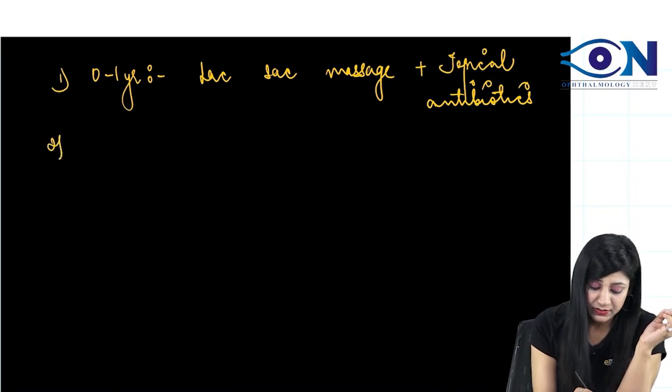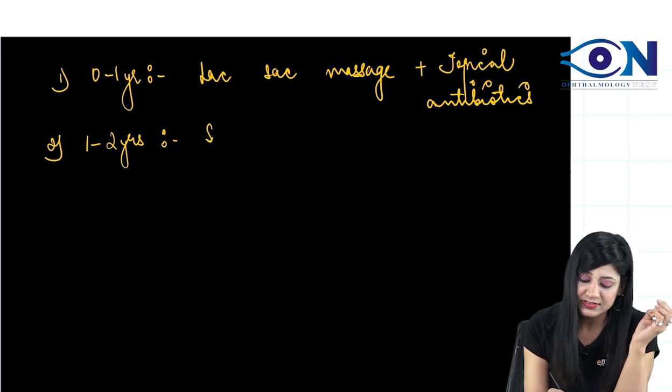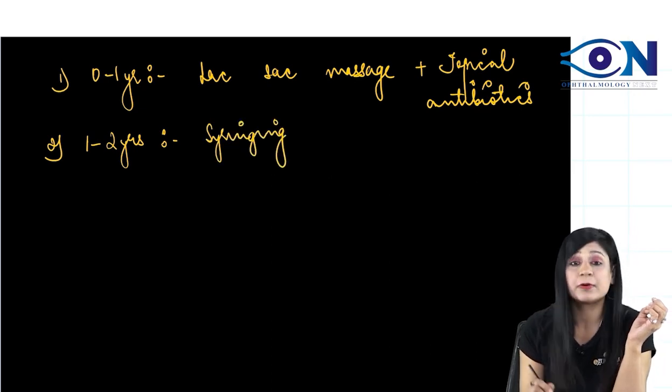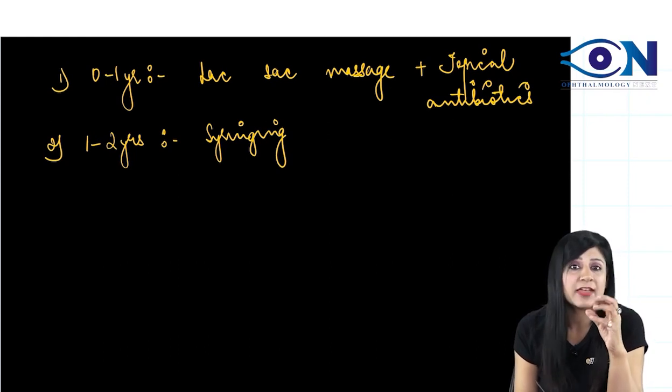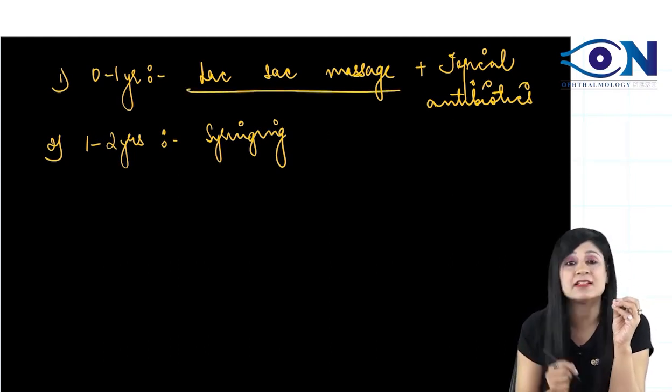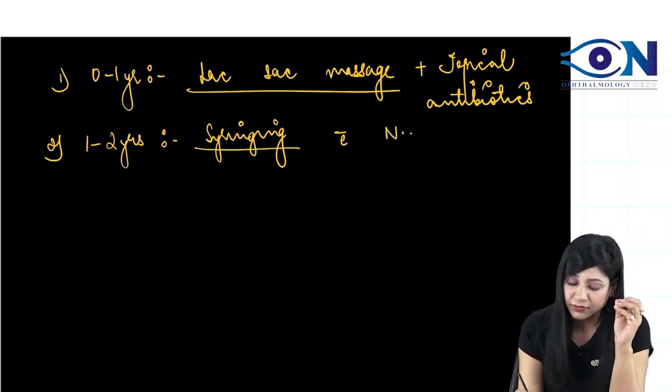Then next one, between 1 to 2 years, we can start with the syringing. The membranous occlusion caused by the valve of Hasner, if you are not able to open by the sac massage, then we can do syringing with normal saline.